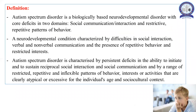Definition: Autism Spectrum Disorder is a biologically based neurodevelopmental disorder with core deficits in two domains. The first is social communication or interaction, and the second domain is restrictive, repetitive patterns of behavior. It is a neurodevelopmental condition characterized by difficulties in social interaction, verbal and non-verbal communication, and the presence of repetitive behavior and restricted interest.